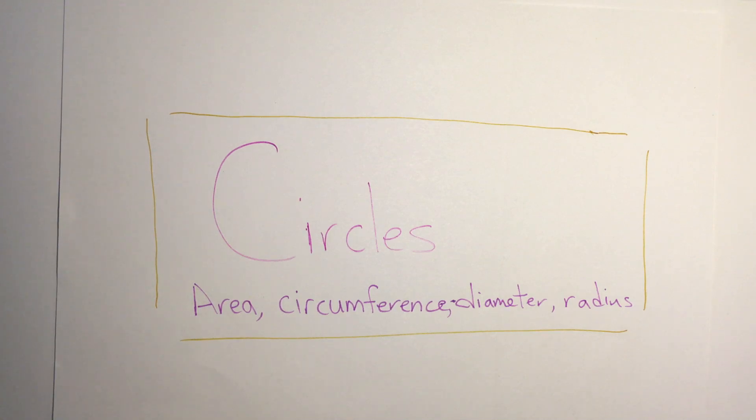In this lesson we're going to be looking at circles, specifically the radius and diameter of circles and how to use those to find circumference and area. Now some of this might be review from other grades, but we're going to look at it so that we know all the definitions before we look at the formulas and how to calculate these.